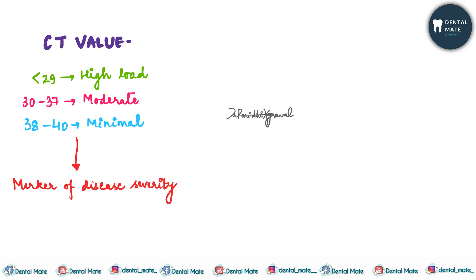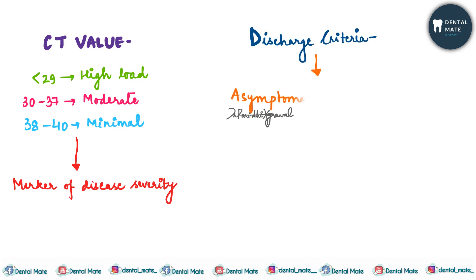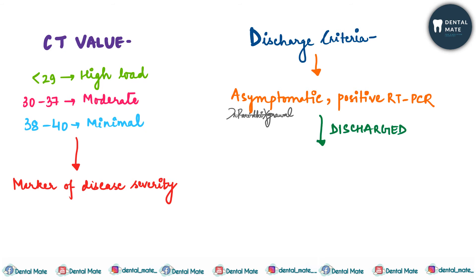The CT value of RT-PCR is also a potential marker of severe disease — it helps identify candidates who may develop severe disease. It also provides discharge criteria for patients. If a patient is asymptomatic but persistently positive on RT-PCR, patients with a CT value greater than 34 to 35 can be discharged from the hospital.